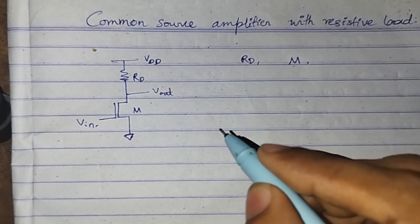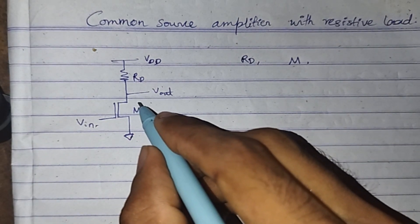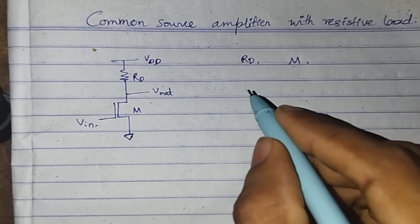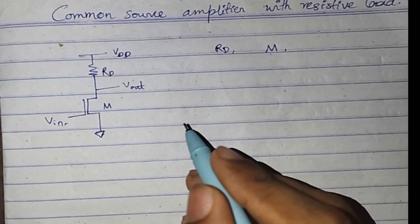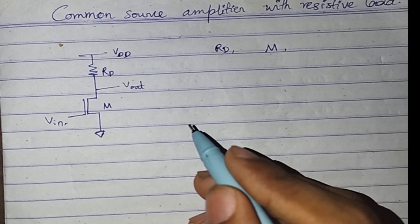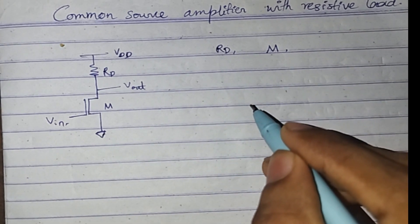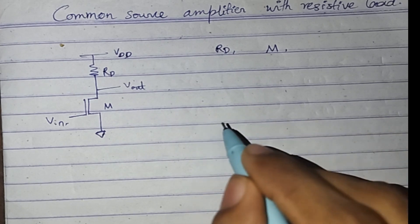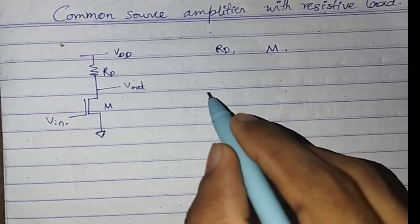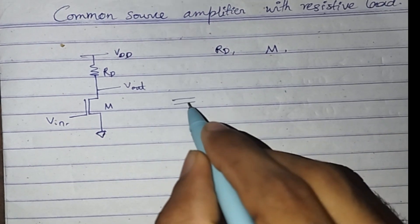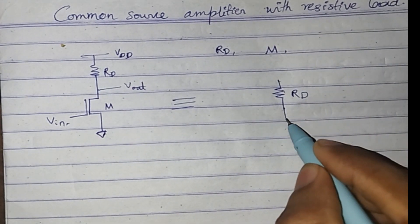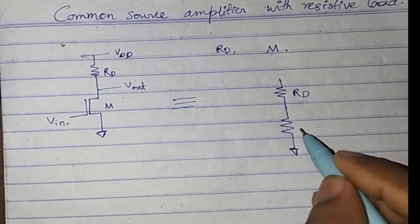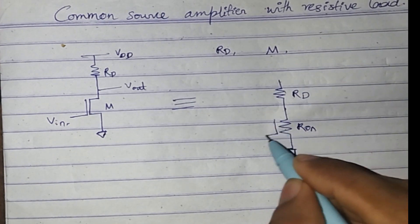From the drain terminal of the transistor we take the output. As we know, the transistor is a variable resistor — based on the input gate voltage its resistance will be varied. So we can model this circuit as two resistors in series: one resistor is RD, the drain resistor, and the other is the internal resistance of the transistor, that is R_on, which is varied by the input voltage.